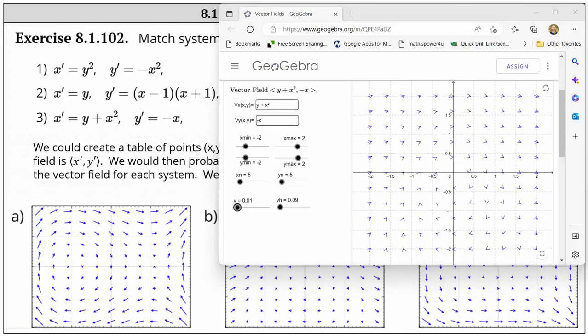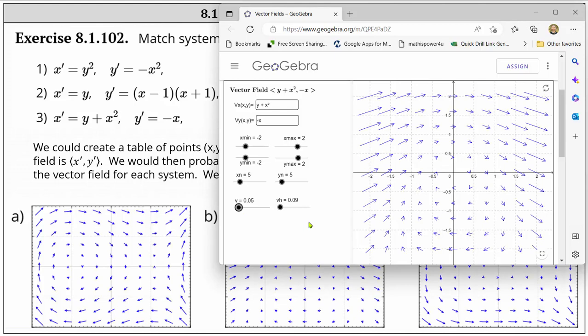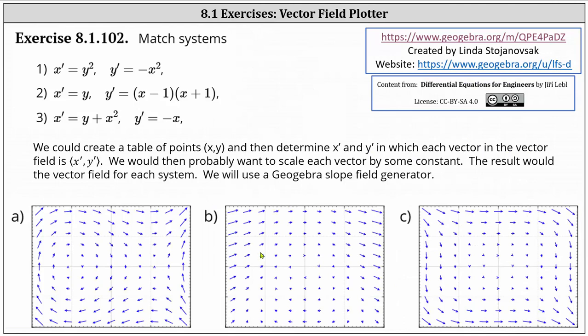To make it better match the given slope field b, let's increase the length of the vectors by increasing the value of v. And again, analyzing the system and the slope field, we can see that (0, 0) is our critical point. That is where both x prime and y prime are equal to zero. And the slope field does match vector field b. The system of differential equations given by number three matches the slope field b.